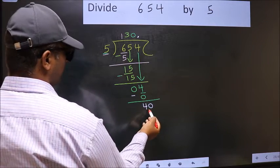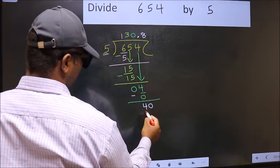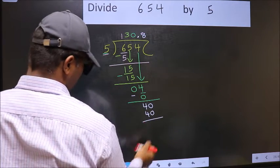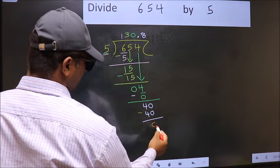So 40. When do we get 40 in the 5 table? 5 times 8 is 40. Now you should subtract. 40 minus 40 is 0.